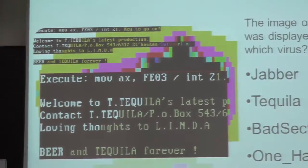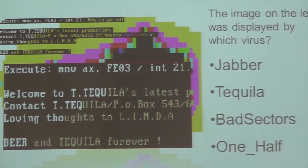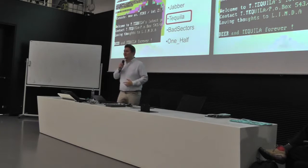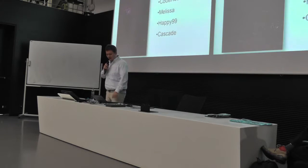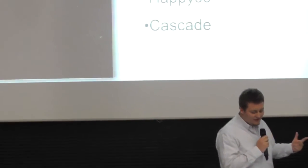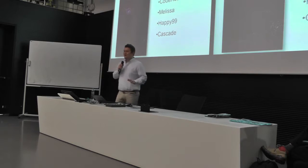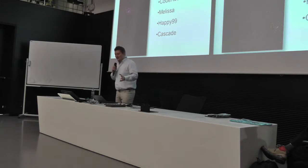Let's try one more: which virus displays the image on the left? We have Jabber, Tequila, Bad Sectors, or OneHalf. Tequila! Excellent — this is the Tequila virus that appeared in 1991. Just some fancy fractal graphics it would display on your DOS screen. Now, a virus from 1999 that would display some fireworks — Code Red, Melissa, Happy 99, or Cascade? Happy 99! Again, mostly a harmless virus. It wouldn't do anything except display a nice picture of fireworks on New Year's Eve.